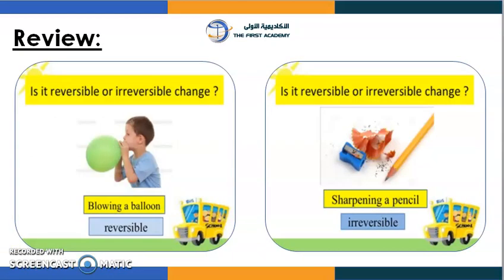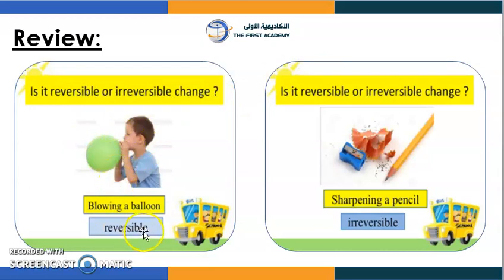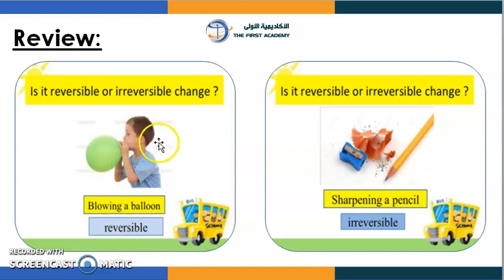Here we'll give you two examples of reversible and irreversible. In the first picture you see a boy blowing up a balloon — is it reversible or irreversible? It's reversible! Why? Because we can take the air out of the balloon and blow it back in again.